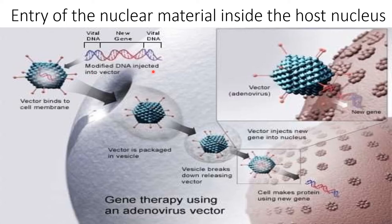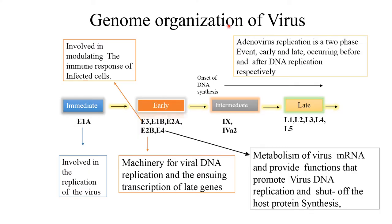The modified gene — the new gene — is injected into the vector, while this is the viral DNA. The vector binds to the cell membrane and is packaged into a vesicle. The vesicle breaks down and releases the vector. The vector then injects the new gene into the nucleus, and the cell makes protein using the new gene. This is how gene therapy using an adenovirus is done.